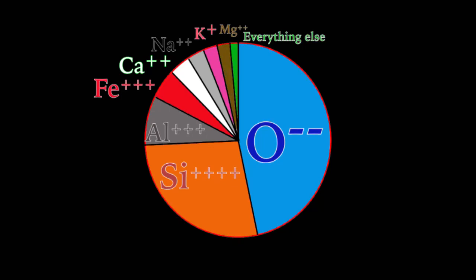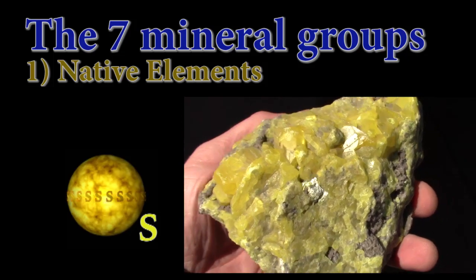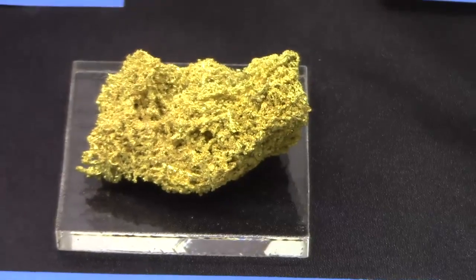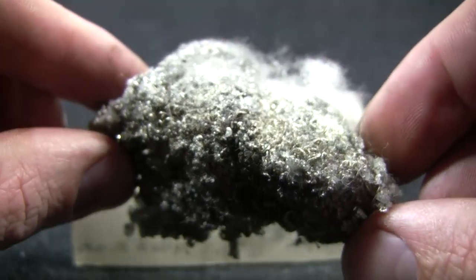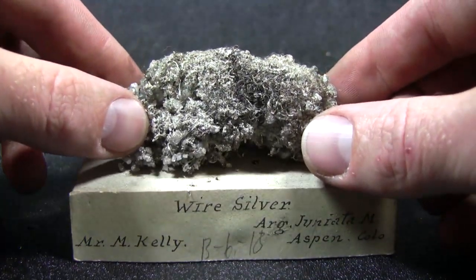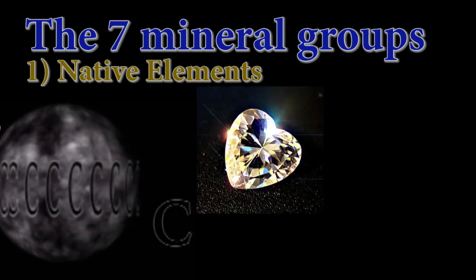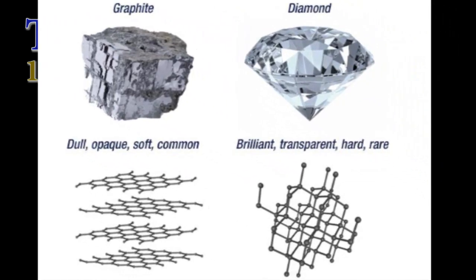There are seven mineral groups arranged by general chemistry. The simplest are the native elements, made by a single element, such as copper, silver, or gold — and we often name such minerals by their elemental name. Gold atoms make up the mineral gold, and silver atoms make up the mineral silver. Other atoms make minerals with more unique names, such as carbon, which can crystallize two different ways to make either diamond or graphite. As long as the atoms are arranged in that orderly, crystalline manner, they count as minerals.